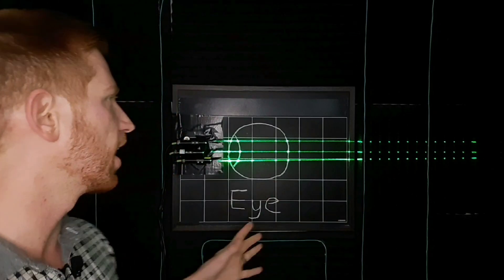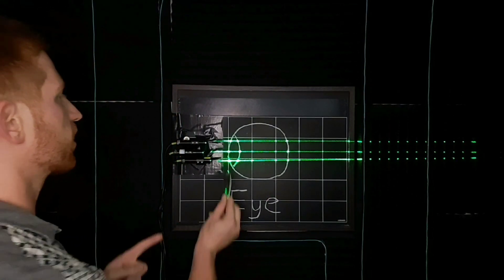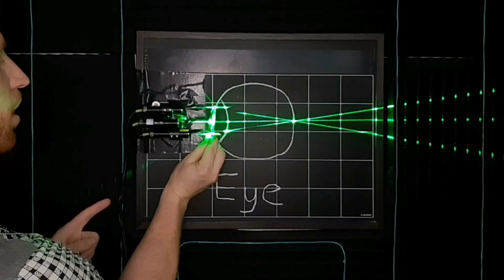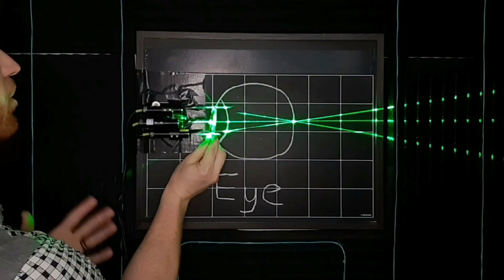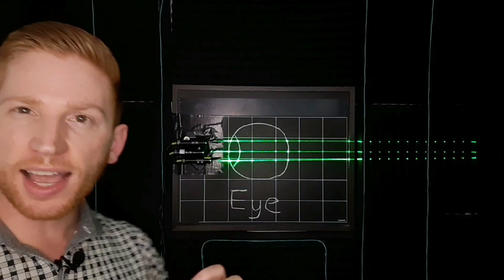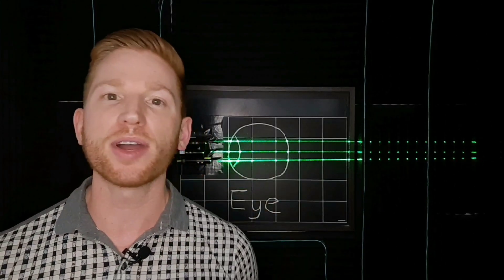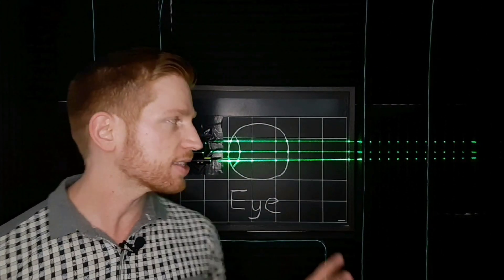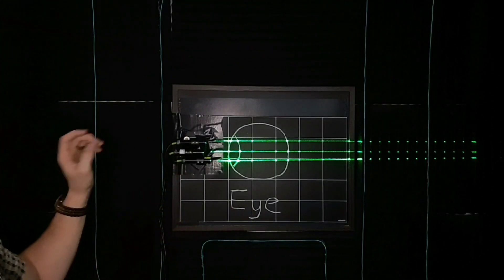So a properly functioning eye looks at something far away, takes in that light, and focuses that down onto a spot on your retina on the back of your eye. And if that spot is nice and focused to a very tiny point, you have nice sharp resolution and can see the world clearly. So that's again looking at something very far away like a star.